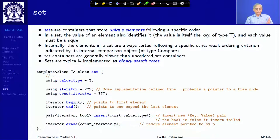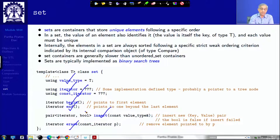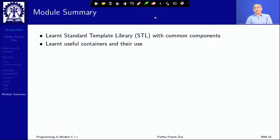Set is another container which keeps a collection of unique elements, also stored as a binary search tree. It has value_type, iterator, const_iterator, begin, end, insert, and erase — very similar signatures to map. There are many more containers. In this module we have learned about the standard template library with common components, focusing on basic containers — vector, map, and others like string and set — and their use. Thank you very much for your attention and we will meet in the next module.